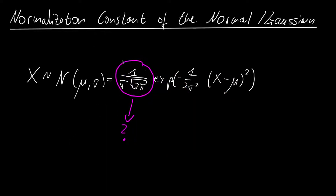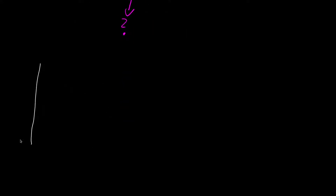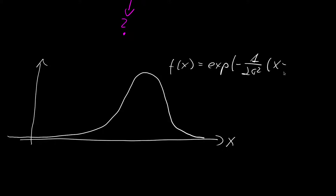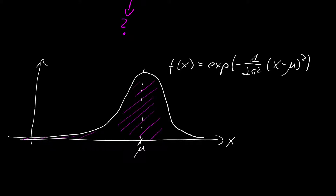Let us start by looking at why we need the normalization constant at all. I am going to draw something that looks like a normal distribution with an x on the x-axis and it has the classical bell shape. Our function is given as the exponential of minus 1 over 2 sigma squared of x minus mu, squared, because it is centered around mu. If you were to do the integral from minus infinity to plus infinity — the area under the curve — and call this I, you would find that I is not equal to 1, which would violate the probability density function requirement.